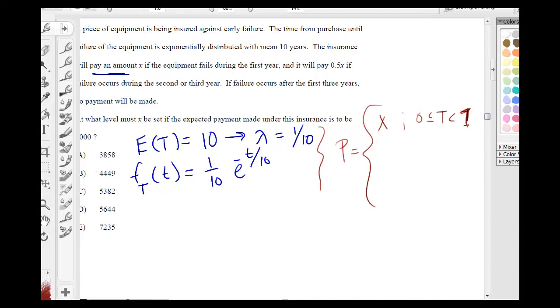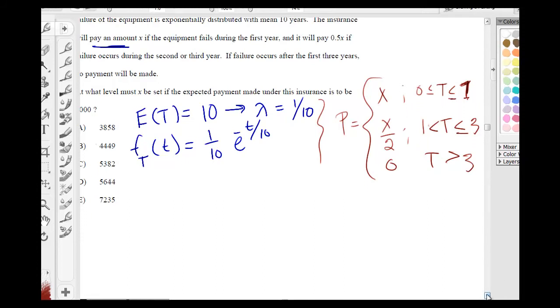And I'm assuming it's including the first year. And it's going to be half of X if failure occurs after the first year. So it's after the first year, so it's not including 1, and all the way through the third year. If failure occurs after the third year, then the payment is going to be 0.